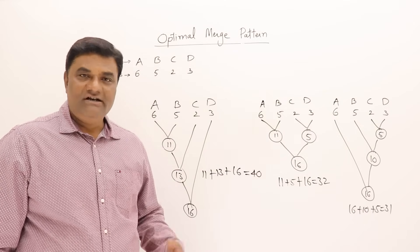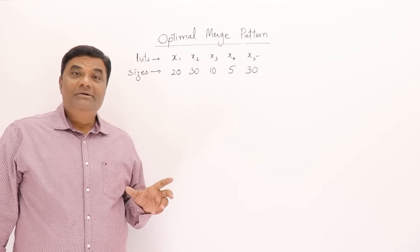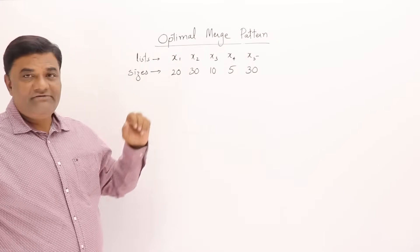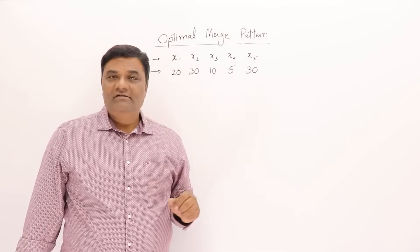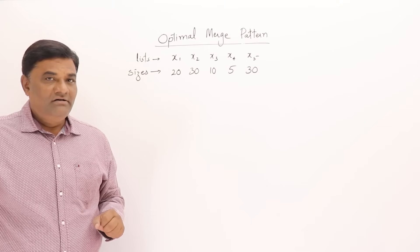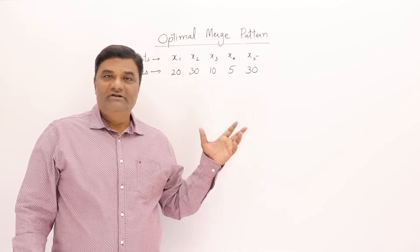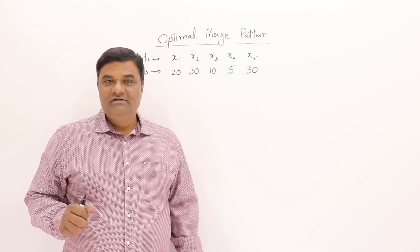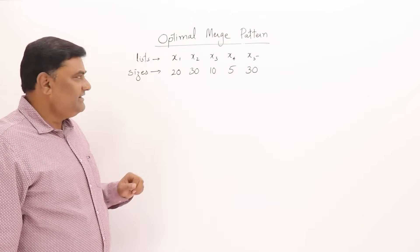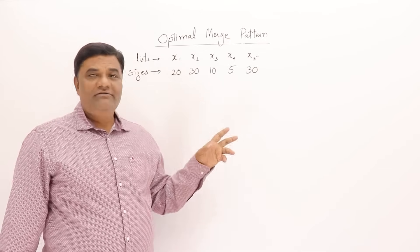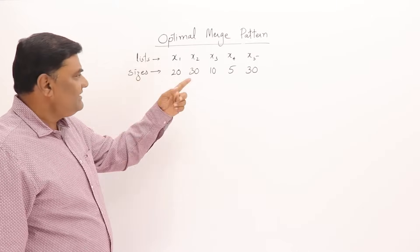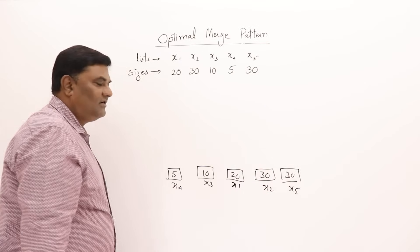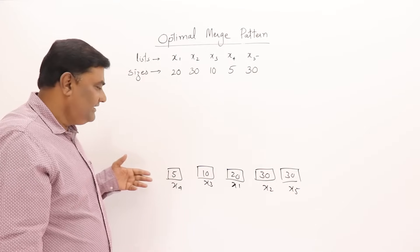Now we'll take an example problem for Optimal Merge Pattern. I have five files x1, x2, x3, x4, x5 with given sizes. We follow the greedy approach: always select the smaller pair of files for merging. Since they are not arranged in increasing order of size, I will first sort them by size.